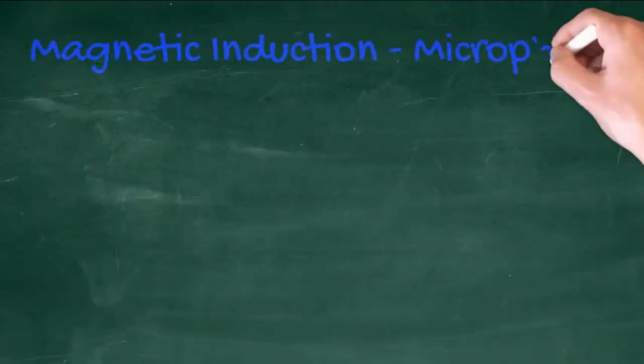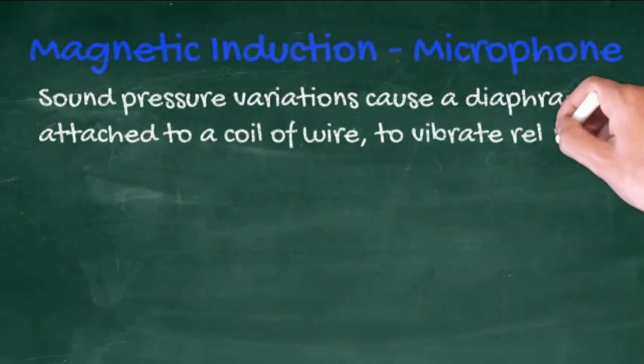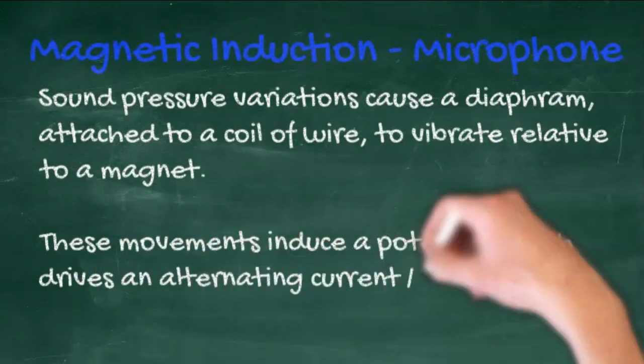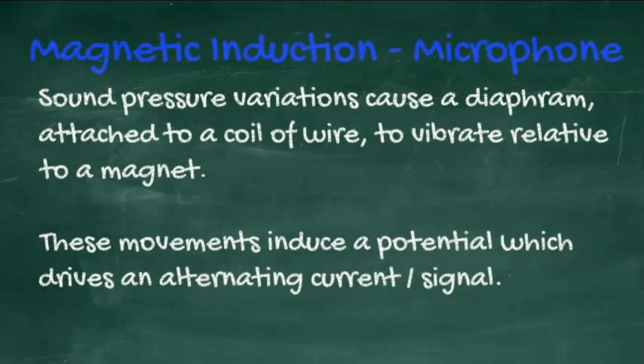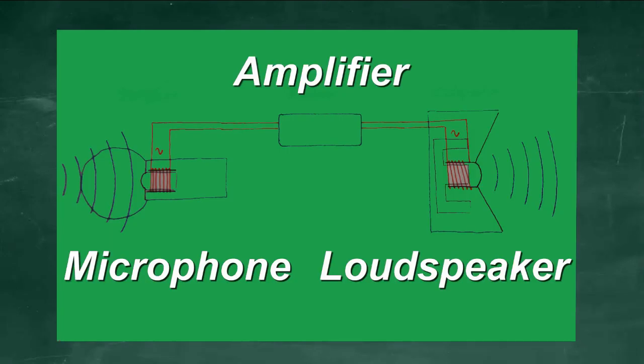This same idea of induced current is what is used in a microphone or a loudspeaker. In the microphone, sound pressure variations cause a diaphragm attached to a coil of wire to vibrate relative to a magnet. These movements are turned into an alternating signal.